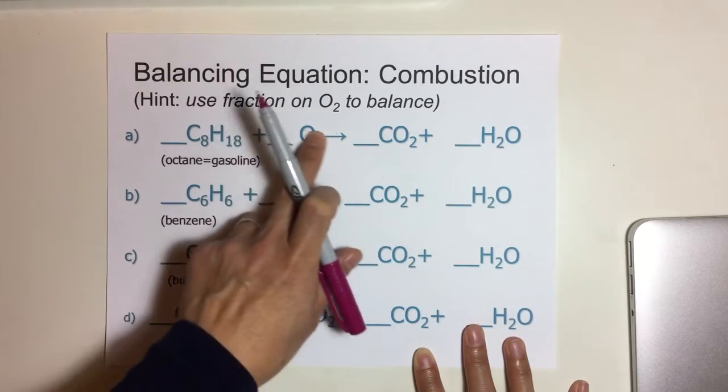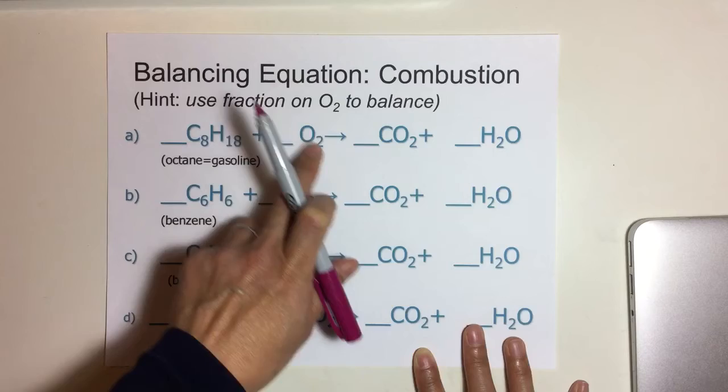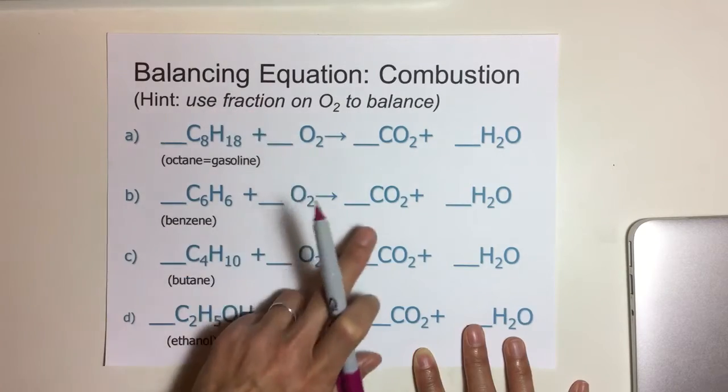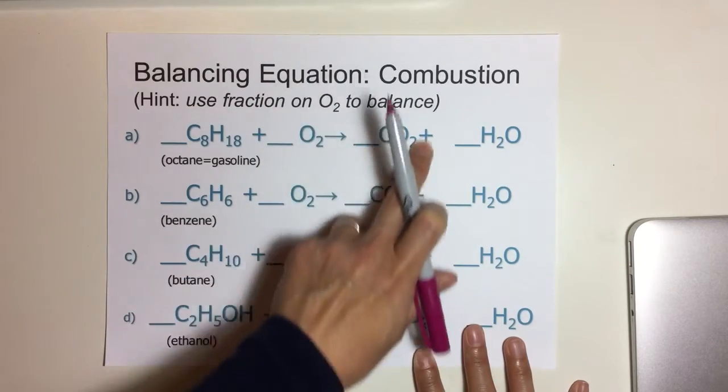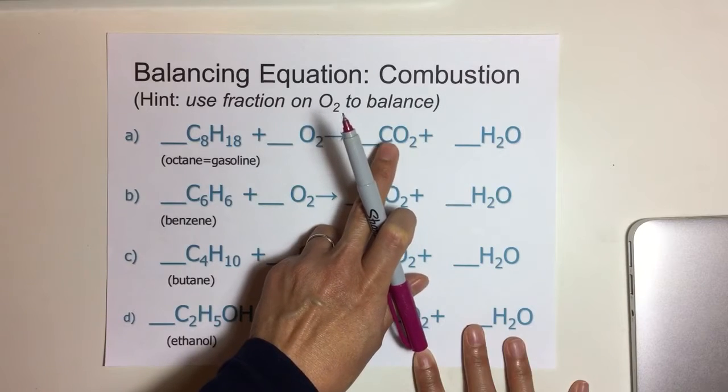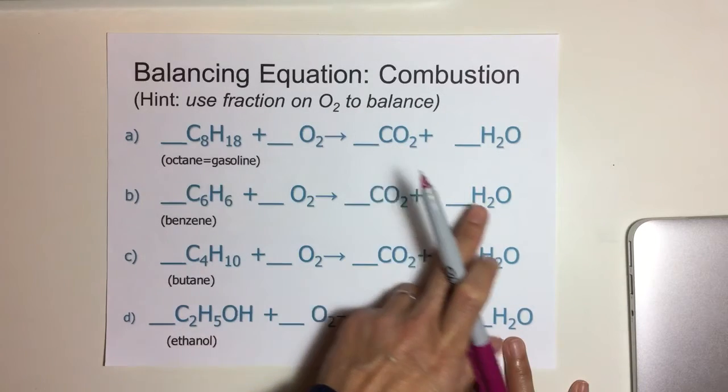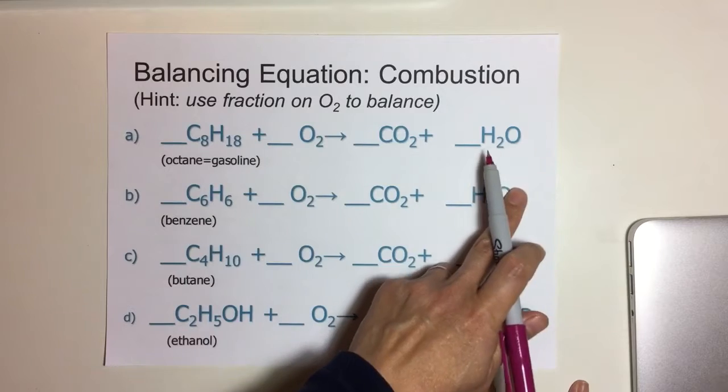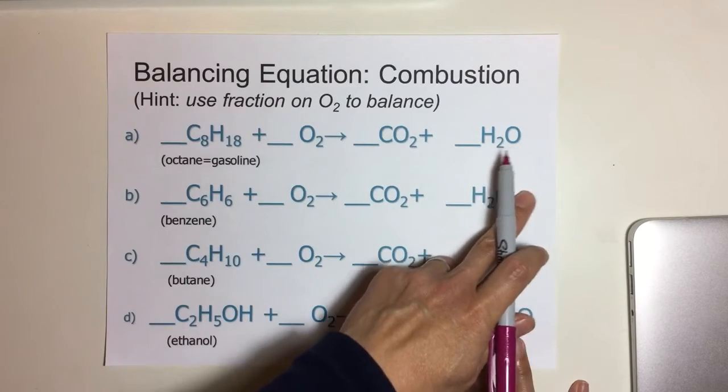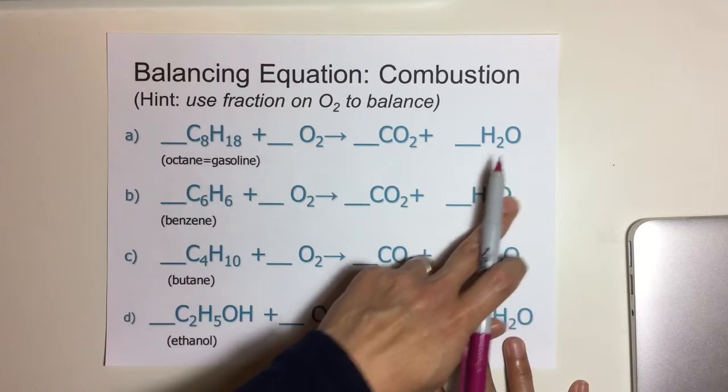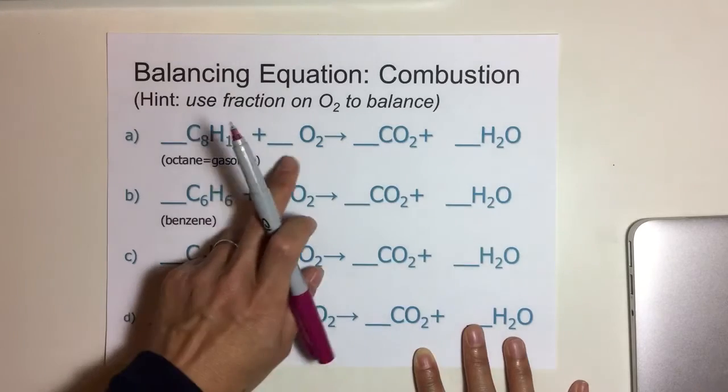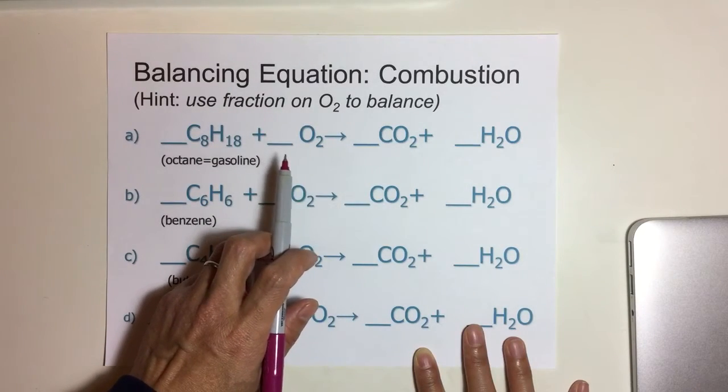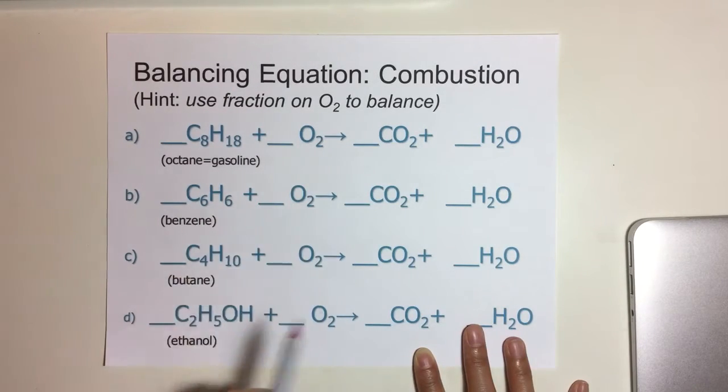Oxygen has only one element even though it's bonded diatomically. Carbon dioxide is bonded with two different elements: carbon and oxygen. Water is bonded by oxygen and hydrogen, so two different elements again. The one substance that you want to use the fraction on is the oxygen because it's only one given element.